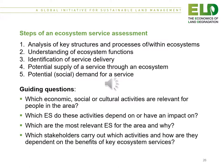The steps of an ecosystem service assessment are: one, the analysis of key structures and processes within ecosystems; two, understanding ecosystem functions; three, identification of service delivery; four, potential supply of a service through an ecosystem; and five, the potential or social demand for a service. Some guiding questions include: Which economic, social or cultural activities are relevant for people in the area? Which ecosystem services do these activities depend on or have an impact on? Which are the most relevant ecosystem services for the area and why? And which stakeholders carry out which activities and how are they dependent on the benefits of key ecosystem services?